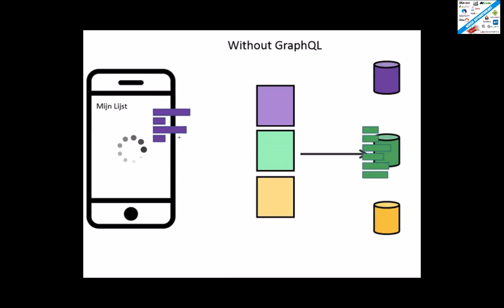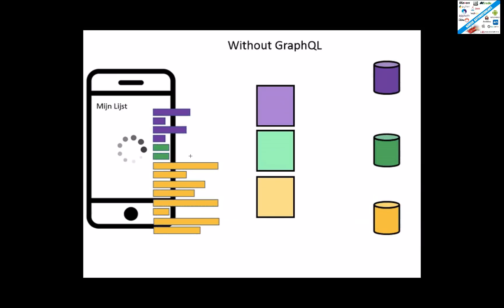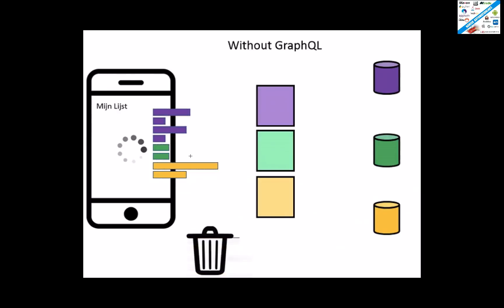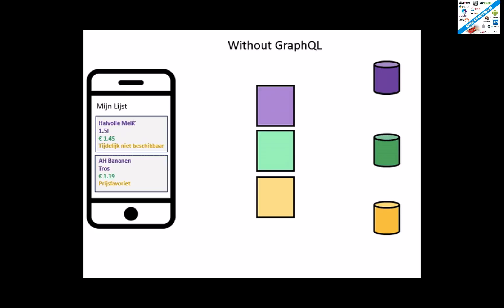We need only a few, so we filter it out and the rest we don't need. Then again we are calling the second API, sending the request, getting the data from the response from the database, sending the response to the client — and the client says I need only two pieces of information from that particular response. Then we are hitting the third API, getting the database response in the form of JSON, and we need only a few attributes. The rest of the information we don't need.